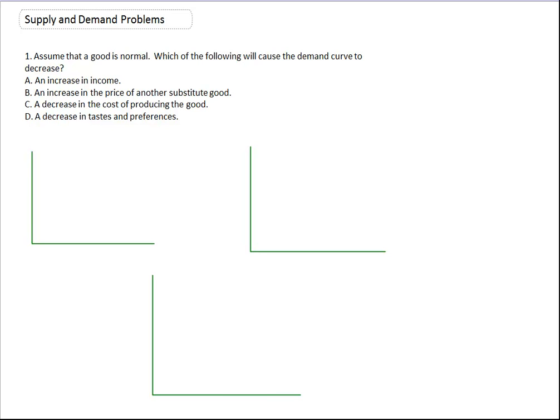Hello, I'd like to run through with you a few problems using supply and demand. So first problem we have here on the screen, assume that a good is normal. Which of the following will cause the demand curve to decrease? Well, let's run through each one of them and decide what's the effect.